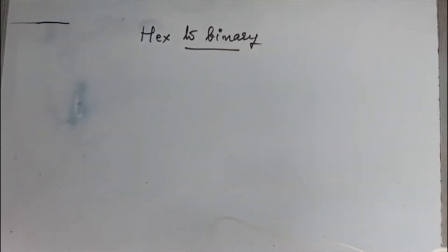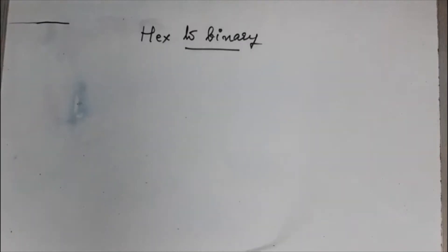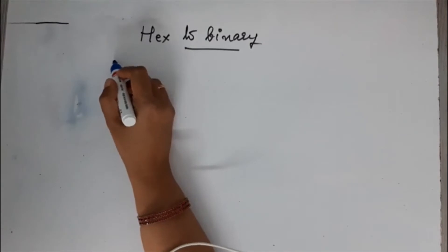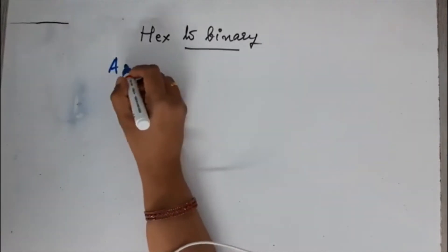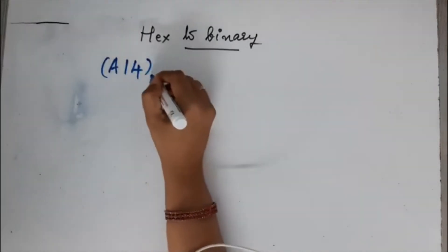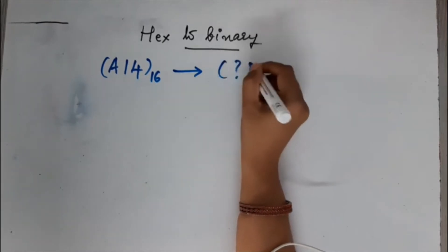Next is hex to binary. We need to know about hex to binary and octal to binary, and the reverse — that is binary to hex and binary to octal. First, if we take hex to binary, suppose the hex number is A14 to the base 16. This we need to convert to binary.